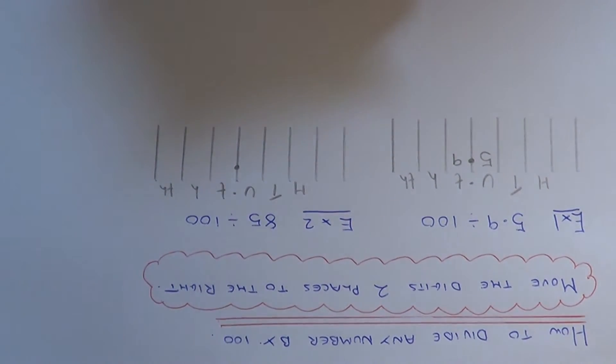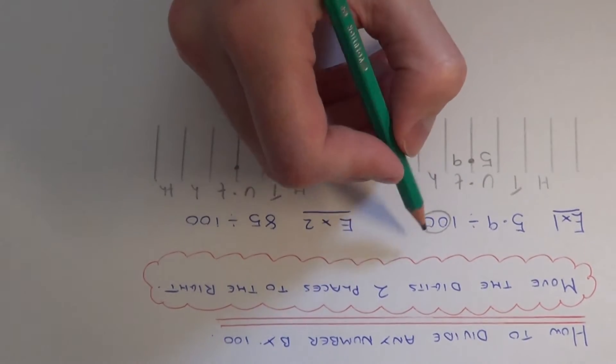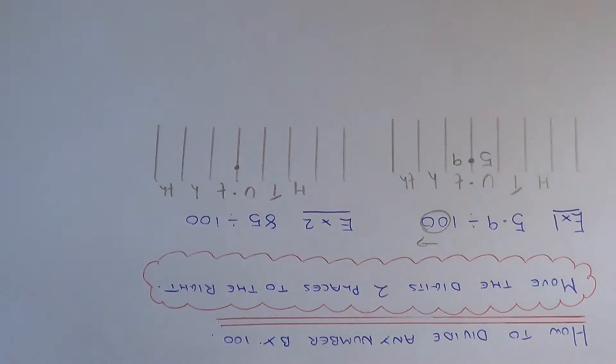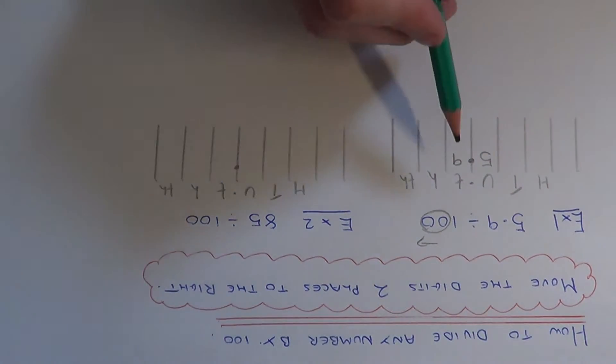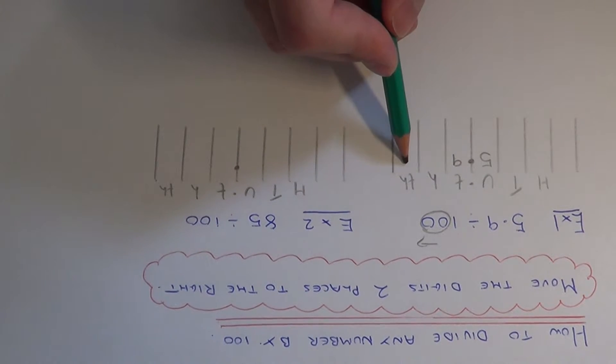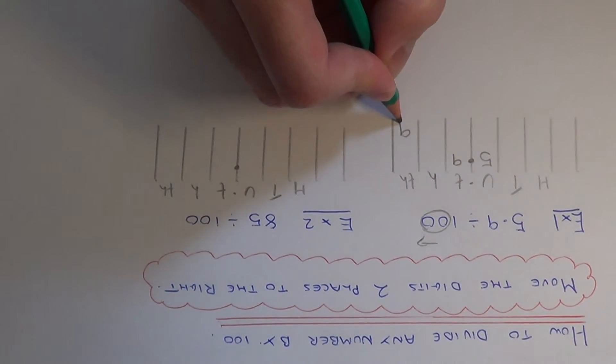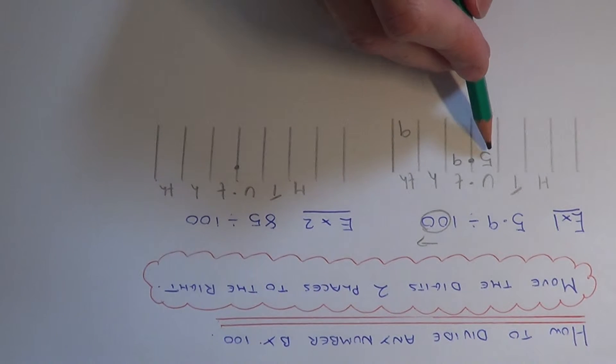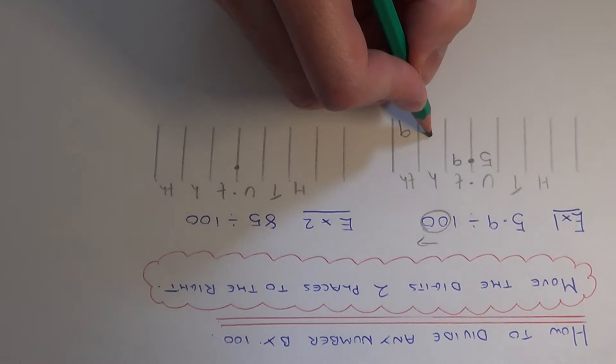If we divide by 100, we move the digits two places to the right. The 9 will go 1, 2, so drop the 9 into the thousandths column. Move the 5 two places to the right, 1, 2, so that goes in the hundredths column.